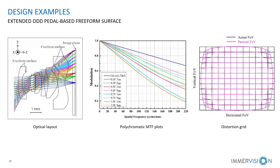This figure shows the MTF. The values at all fields are greater than 19% at 220 cycles per mm. This figure shows the distortion grid, and the maximum distortion is about 24.7%.